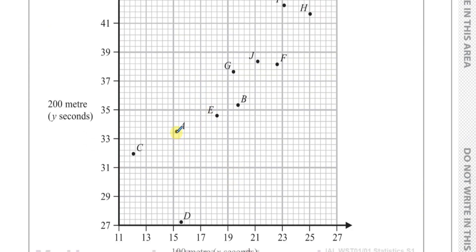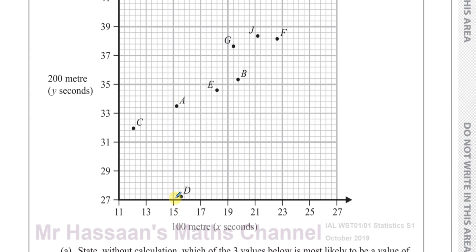So for example, this boy A, that's the time he ran for the 100 meter race which is somewhere between, that's 15, I guess that's 16, somewhere just over 15 seconds and somewhere just over 33 and a half seconds, that's how long he took to run the 200 meter race. So this is the time for the 100 meter race for this boy and this is the time for the 200 meter race for this boy. And the same for all of them.